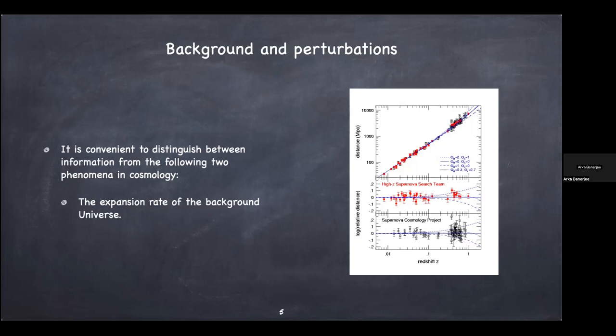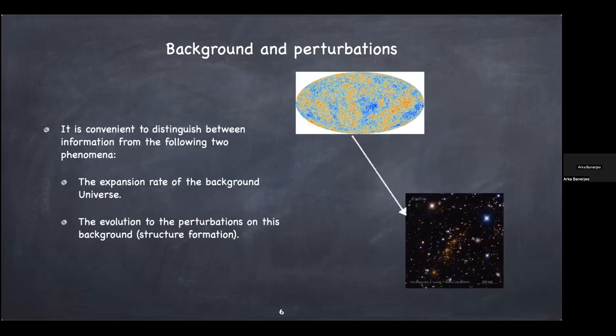That's the background universe — it expands and you can measure whether the rate is slowing down or getting faster. The second thing to think about are perturbations on this background. If you look at the cosmic microwave background, you'll see fluctuations of one part in 10^5 — the universe started with small fluctuations. Gravity drives these: if a region has more matter than its surroundings, gravity pulls even more matter in; if it has less, it gets emptier. Gravity drives small perturbations to grow and become large over time.